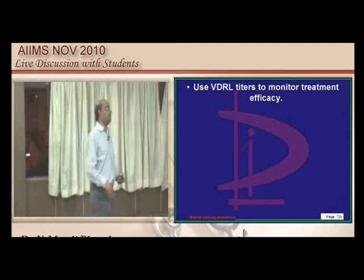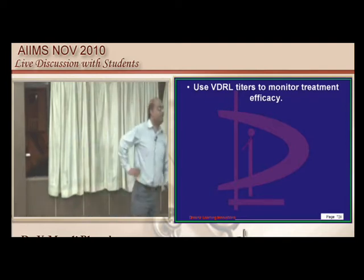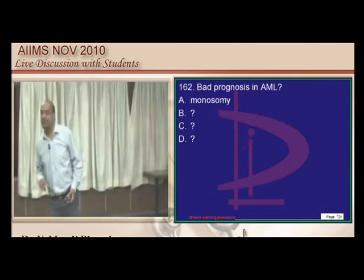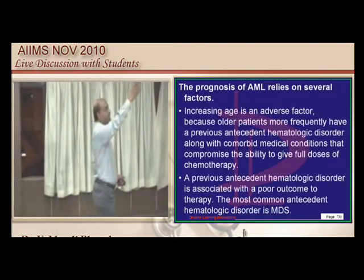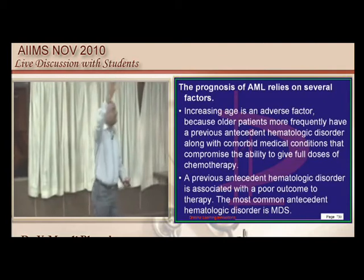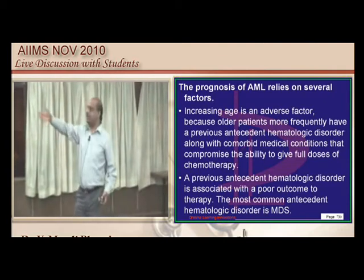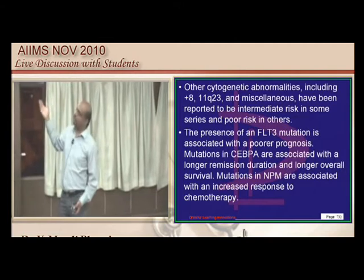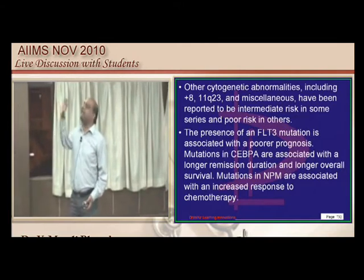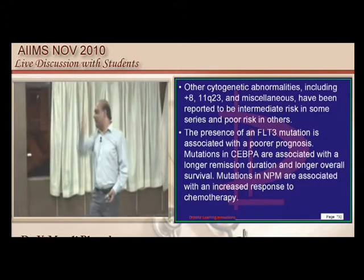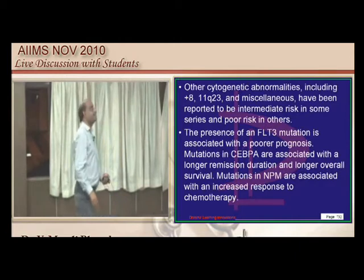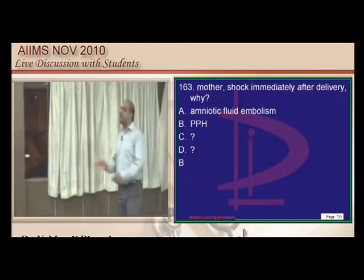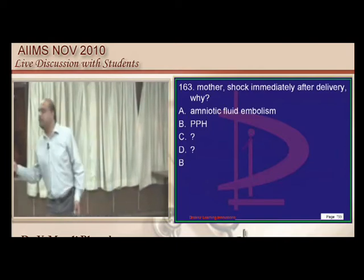For AML, remember cytogenetic factors, age factors, chromosomal factors, monosomies, and which chromosome monosomies affect prognosis — this is an important list to remember.